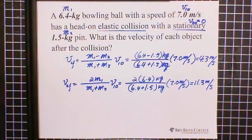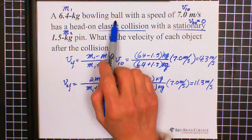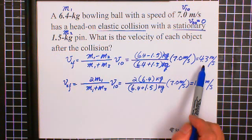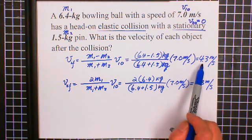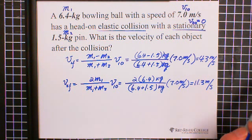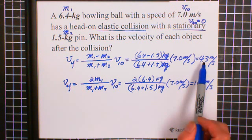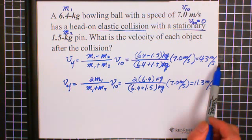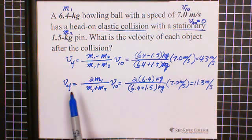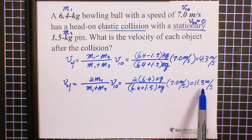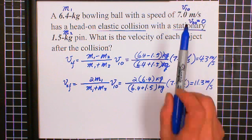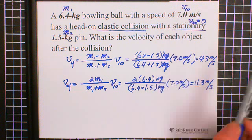So from this question we can see, after the collision, the first ball, the bowling ball, still keeps the original direction at 4.3 meters per second. And the second object pin, 11.3 meters per second with the direction of the bowling ball.